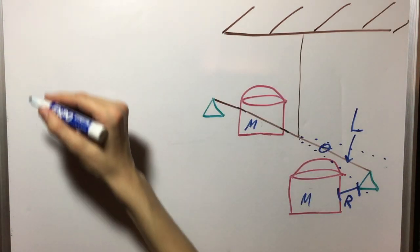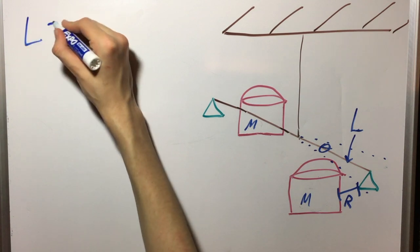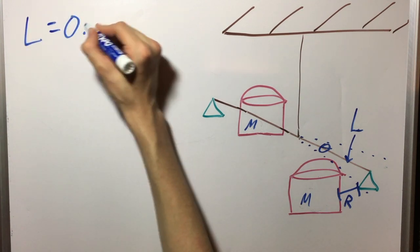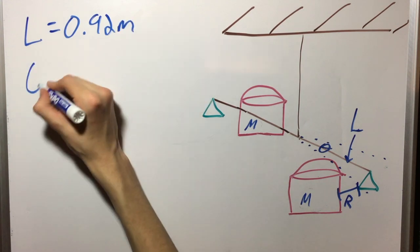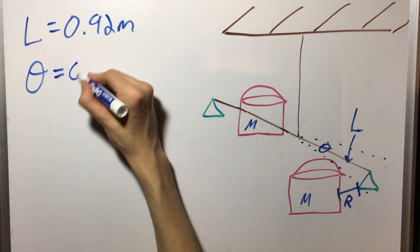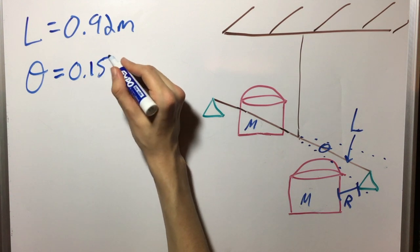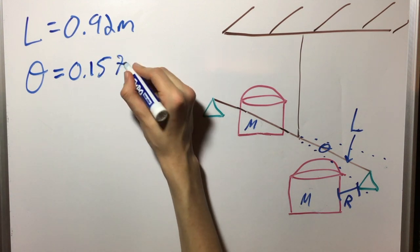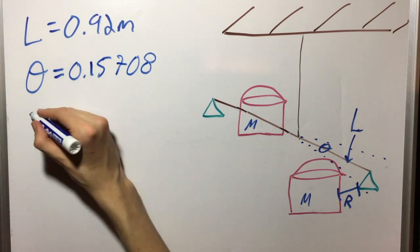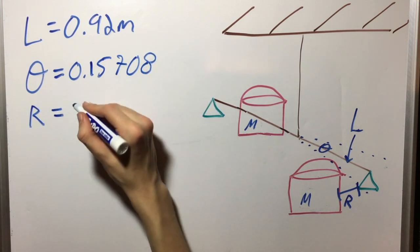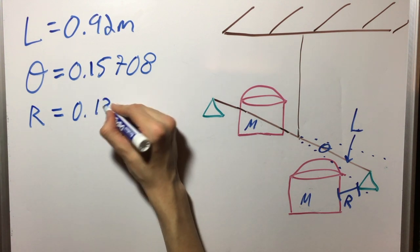Here are our final measurements. The length of the bar, or L, is equal to 0.92 meters. Theta, or the angle the torsion bar moves from rest to a state of equilibrium, is equal to 0.15708 radians. The distance between the two disproportionate masses, R, is equal to 0.13 meters.